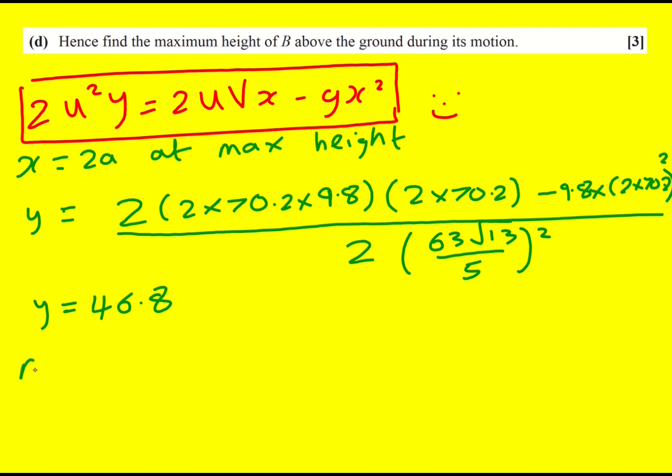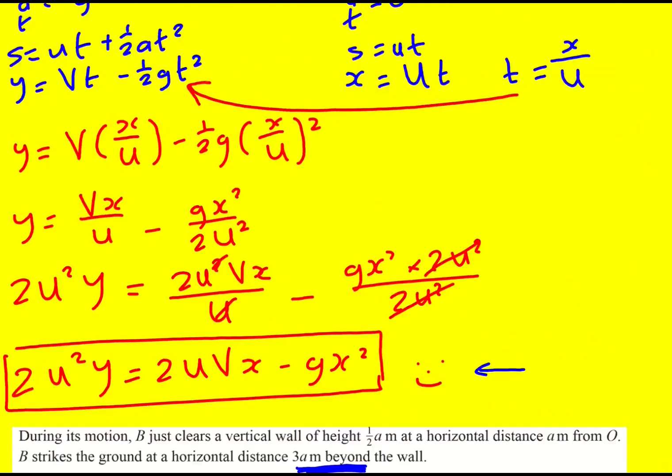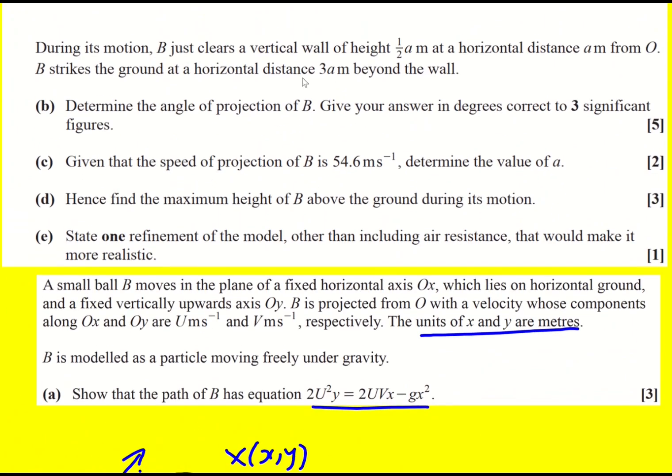Okay, so that is the maximum height. By the way, I'm not going to go into, like this is already quite a long video, I'm not going to go into any more detail, but there are alternative solution methods I've mentioned two, but have a little look if you're interested. All right, right back to the start, state one refinement of the model, other than including air resistance, that would make it more realistic. So I personally put, take into account the dimensions, because we've been assuming it's a particle and has no dimensions, essentially.